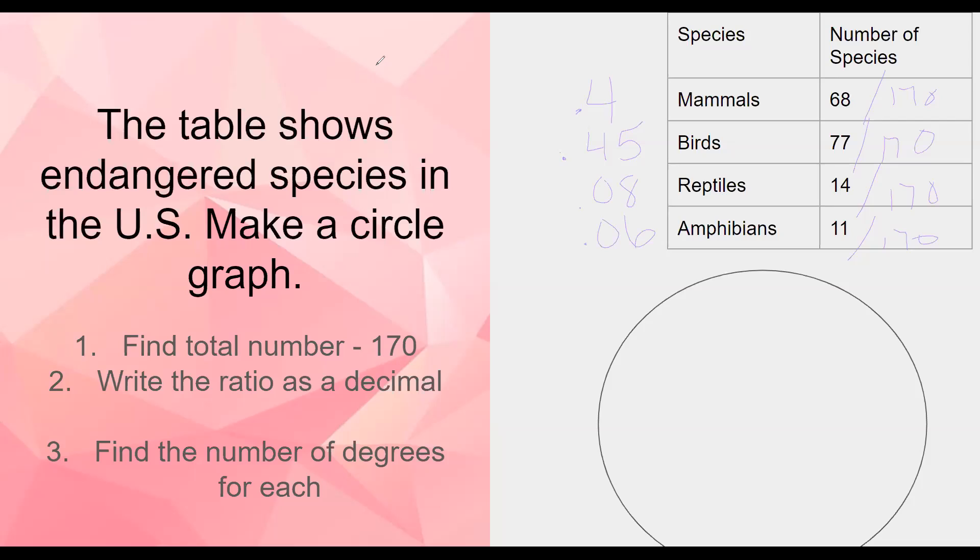So now I have my decimals, but I still need to multiply those by 360 so I can get the degrees that I need to use to make my circle graph. So I have 0.4, I'm gonna multiply it by 360. So this is 144 degrees. Again, I'm just using a calculator. 0.45 is 162 degrees. Then 0.08 is 28.8 degrees. I'm gonna round it to 29 degrees. And then 0.06 is 21.6 degrees, and I'm gonna round that to 22 degrees.